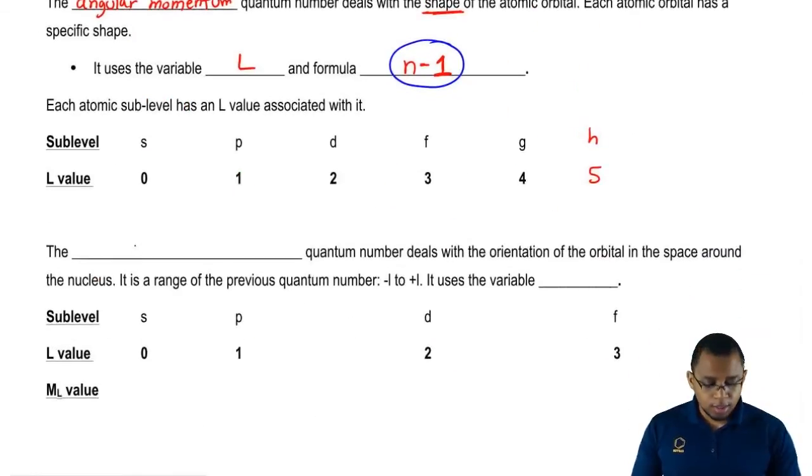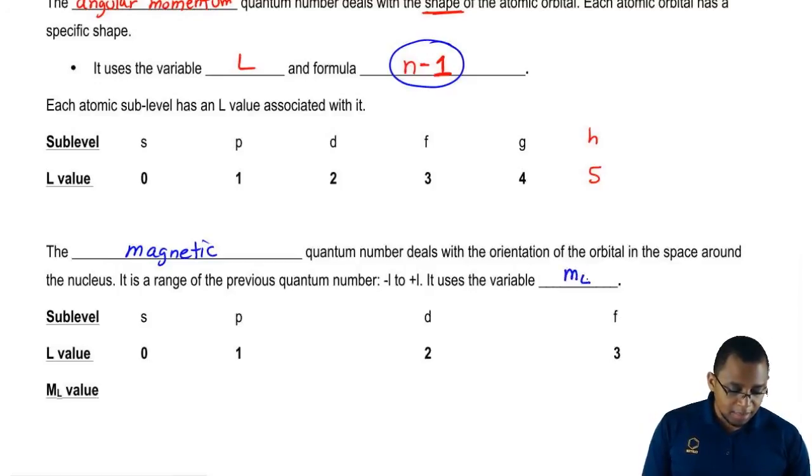The third quantum number is known as the magnetic quantum number, and this deals with the orientation of the orbital in space around the nucleus. It is a range of the previous quantum number, minus L to plus L. It uses the variable m sub L.